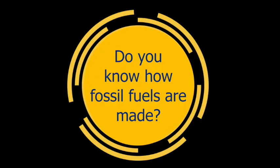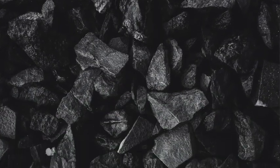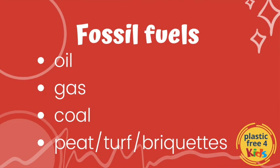So, we were talking about fossil fuels. Do you know how fossil fuels are made? Over millions of years, the remains of the plants and animals that used to live on our planet have been compressed and compacted way down under layers of soil, earth and even water. Over that time, they have become fossil fuels — like oil, gas, coal, and peat, which we might also call turf.